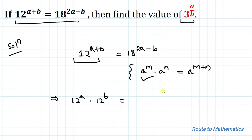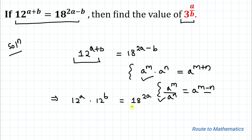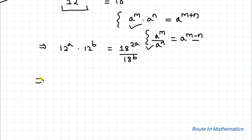On the right-hand side I will apply another exponential law: a to the power m divided by a to the power n equals a to the power (m - n). Since we have a minus sign, I can write 18 to the power 2a divided by 18 to the power b. Now in the next step I will prime factorize each base.